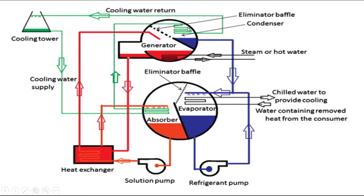The eliminator buffer prevents the entry of lithium bromide solution into the condenser side, so only water vapor enters the condenser. We also have a solution pump for pumping the solution, and a heat exchanger for preheating the solution.